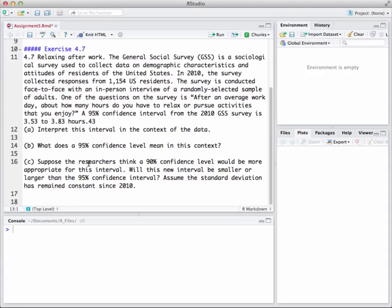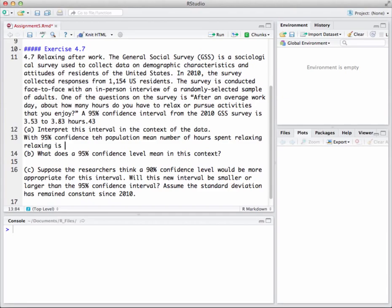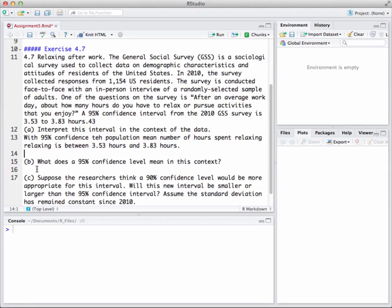Let's answer their question. It says interpret this interval in the context of the data. In context of the data, with 95% confidence, the population mean number of hours spent relaxing versus doing statistics is between 3.53 hours and 3.83 hours.